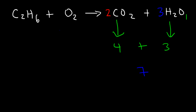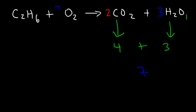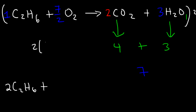So what number do we need to put in front of O₂? What number times two equals seven? The opposite of multiplication is division, so seven divided by two — it's a fraction. The reaction is balanced, but we don't want to leave it like this. We want to get rid of the fractions, so we'll multiply everything by two — all the coefficients, not the subscripts. Two times seven over two: the twos cancel, giving you seven.